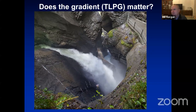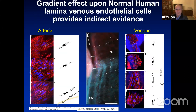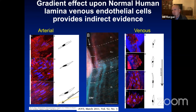Do the gradients actually matter? The gradients affect the pressure distribution in the axons and nerves, also the connective tissue, and also the veins in particular as they leave the back of the eye.